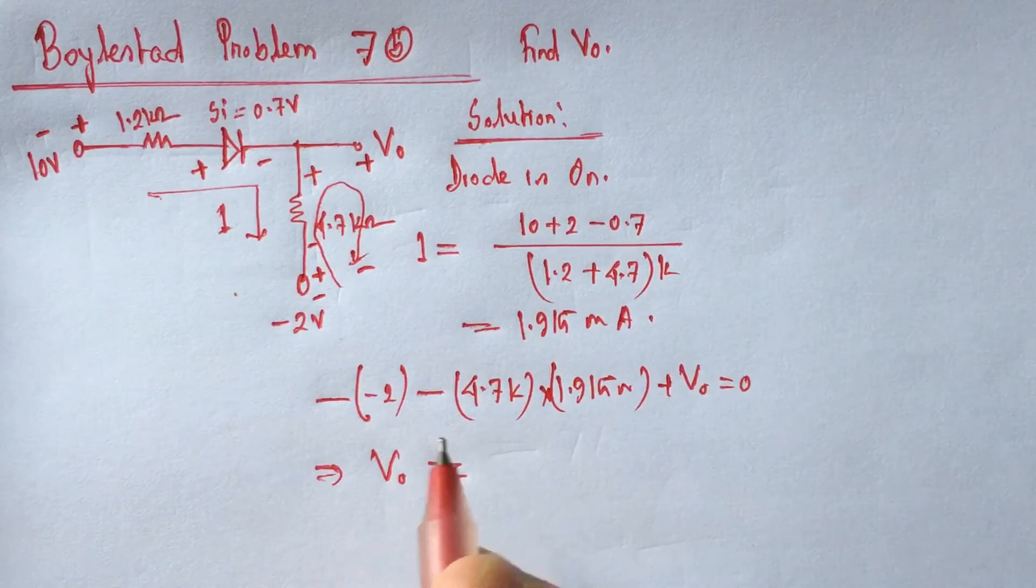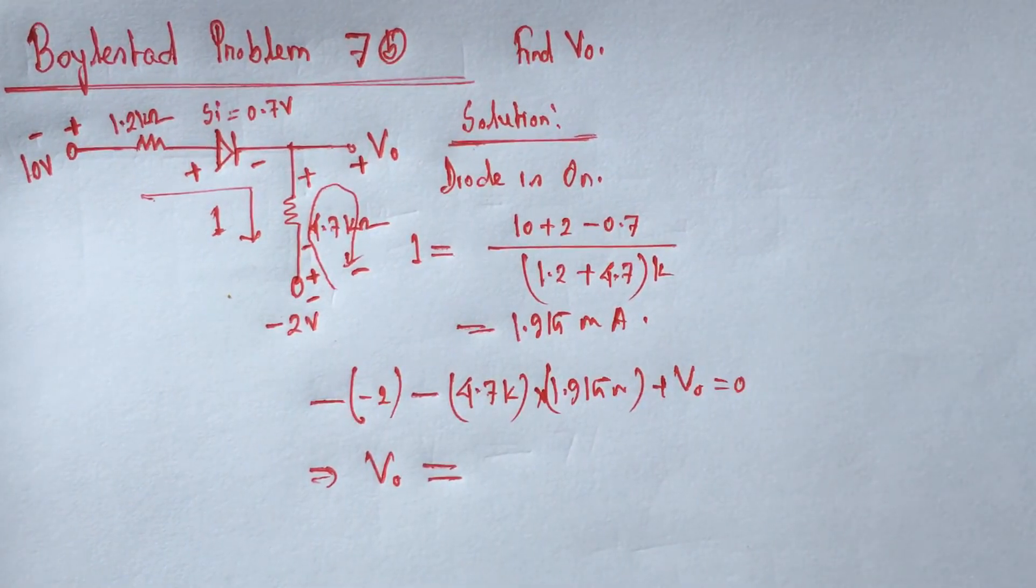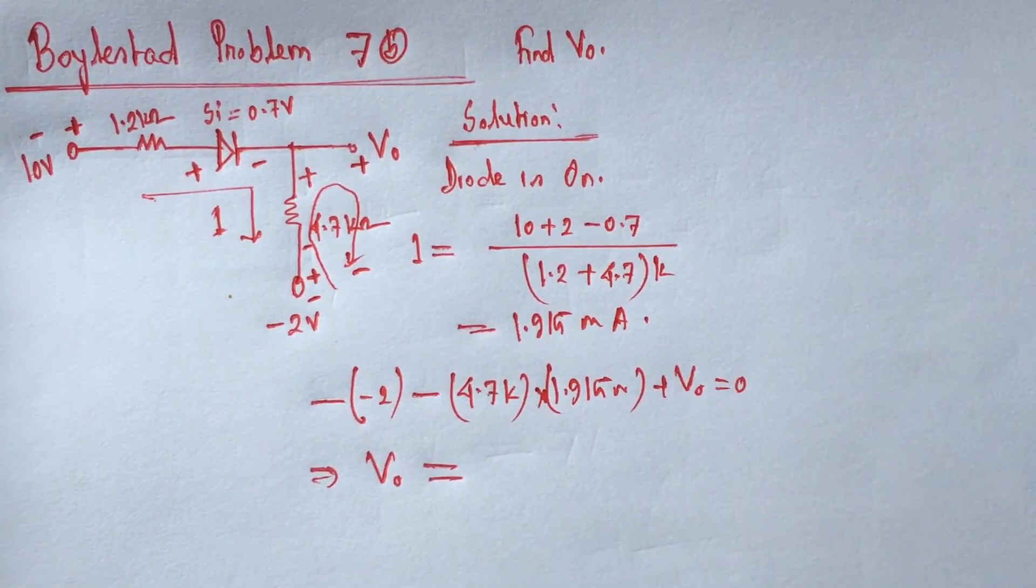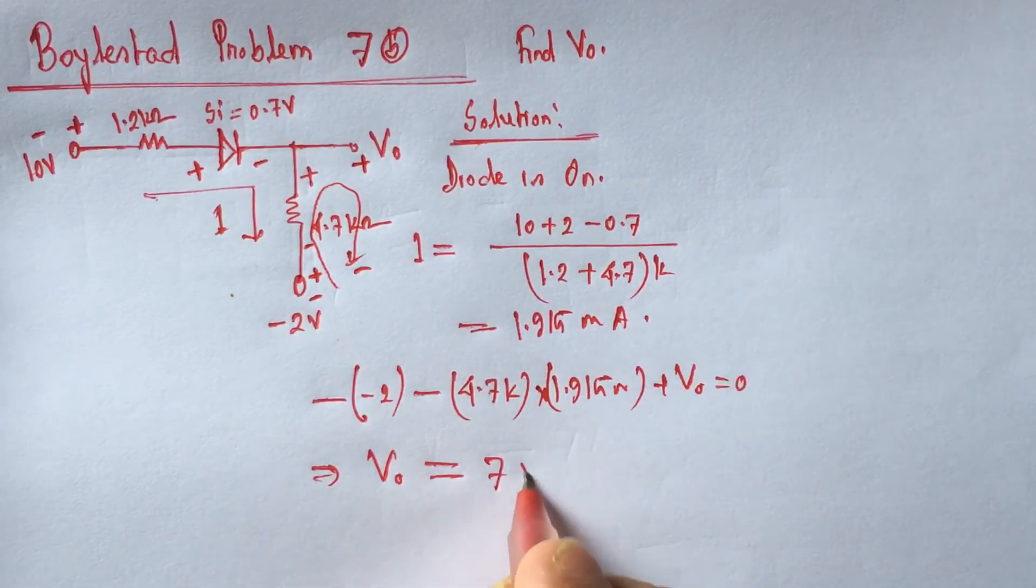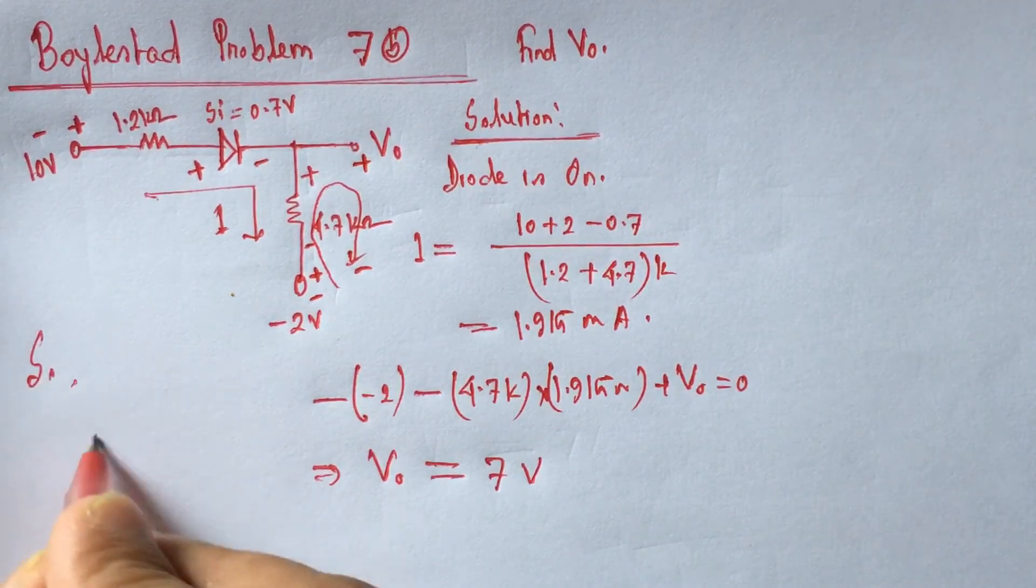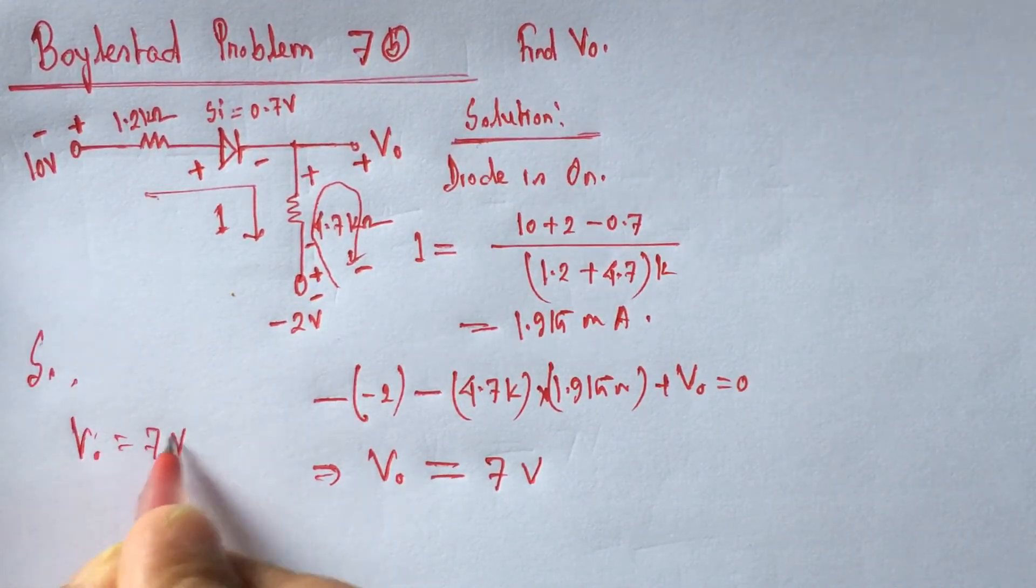So, solving the equation, we will have V0 is equal to 7 volt. So, V0 is equal to 7 volt.